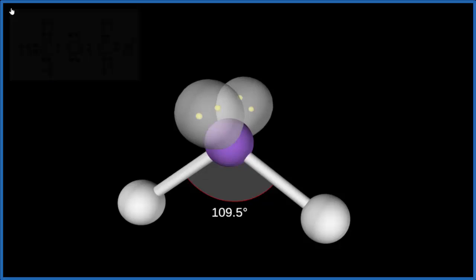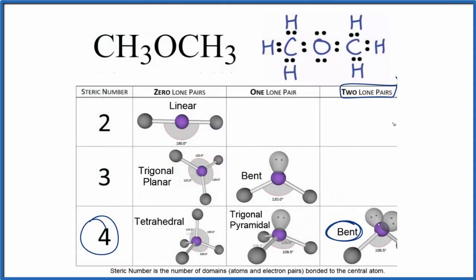Back to our Lewis structure, we could also use the AXE notation to figure out the molecular geometry for CH3OCH3. We have A, that's the central atom. X, that would be the number of atoms bonded. We have a carbon and a carbon, so two carbons.